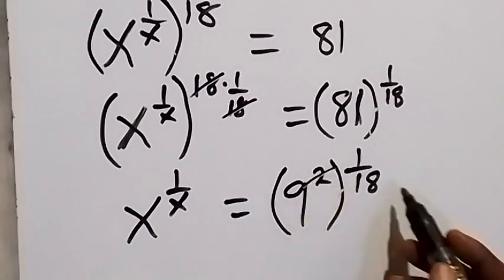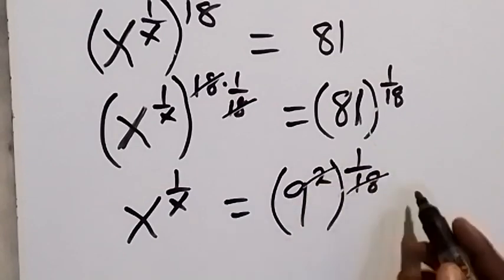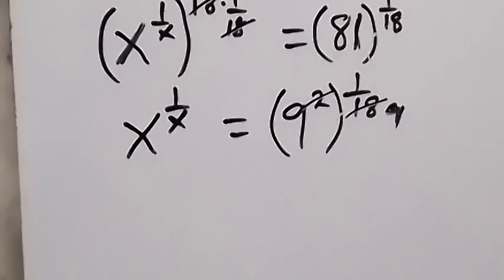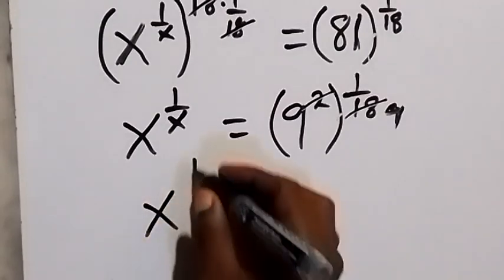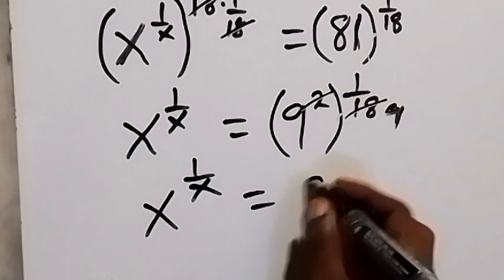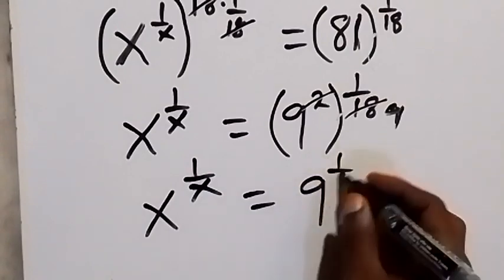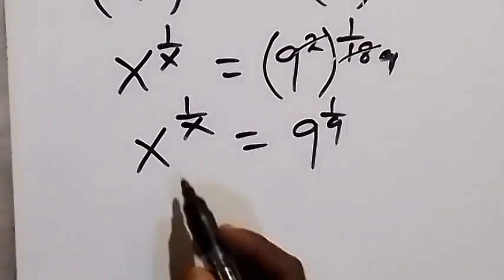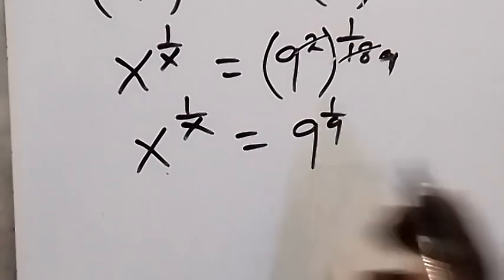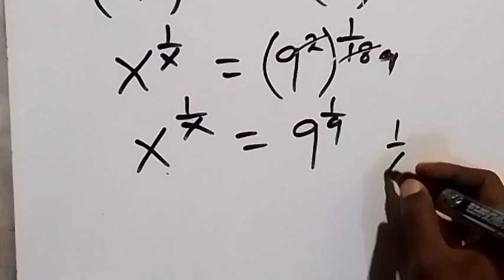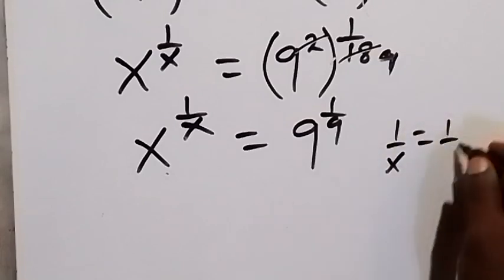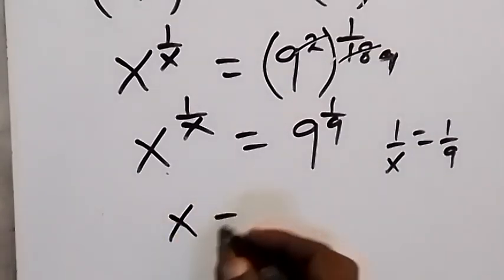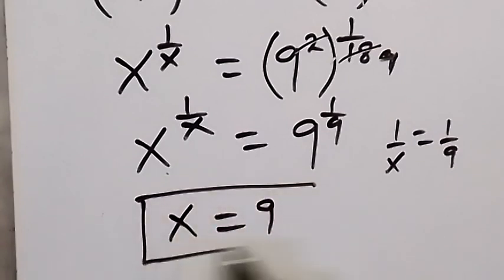We are left with x raised to power 1 over x, which is equal to — on this side, we can express 81 as 9 raised to power 2, then raised to power 1 over 18. Here, 2 will go into 18 because these powers multiply, and that's 9, so we mean 1 over 9. Then we can write this as x raised to power 1 over x equals to 9 raised to power 1 over 9. When we compare the left-hand side, x is the same as 9, and 1 over x is the same as 1 over 9, which indicates that x is also 9. So x is equal to 9.